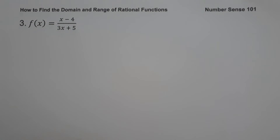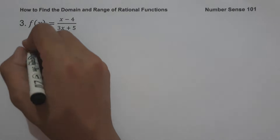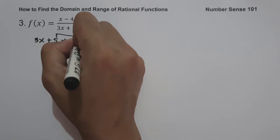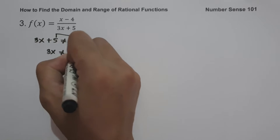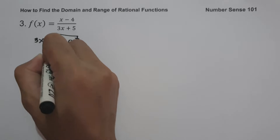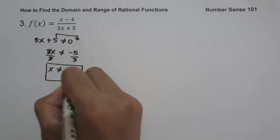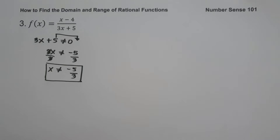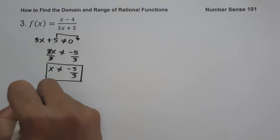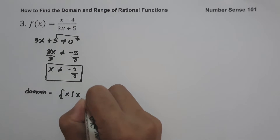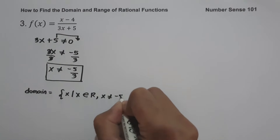Example 3: f(x) = (x - 4)/(3x + 5). To find the domain, equate the denominator not equal to 0: 3x + 5 ≠ 0, giving 3x ≠ -5. Dividing both sides by 3: x not equal to -5/3. Substituting -5/3 gives undefined. So the domain is the set of all real numbers except -5/3, written in set builder notation.